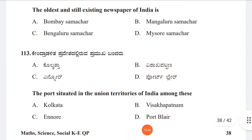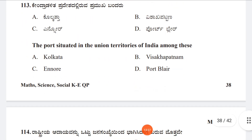Question 113: Among these, the port situated in the Union Territories of India is Option A: Kolkata, Option B: Visakhapatnam, Option C: Ennore, Option D: Port Blair. Port Blair is the correct answer — it is situated in the Andaman and Nicobar Territory.